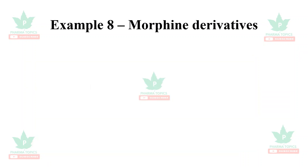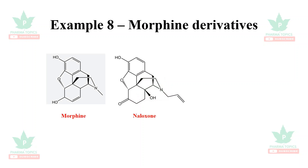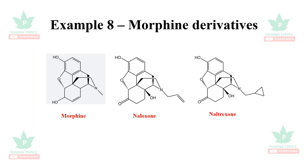Finally, morphine derivatives illustrate ring optimization. The lead molecule morphine underwent ring optimization to yield naloxone, a morphine antagonist, and then naltrexone, a long-acting antagonist used for opiate addiction treatment. This concludes the explanation of lead optimization with examples.